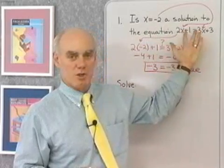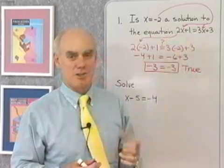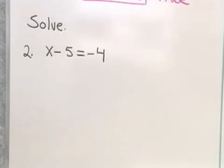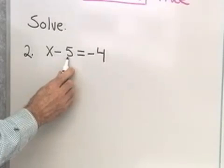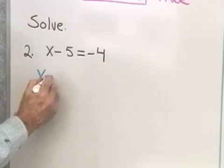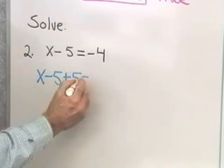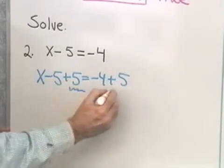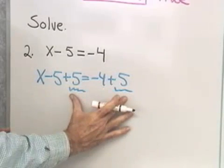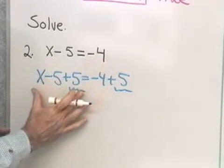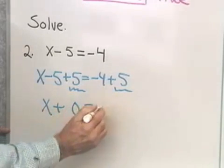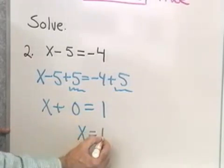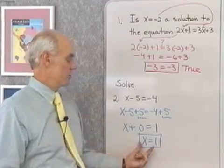Any other number we replace x with will give us a false statement. Let's solve our first equation: x minus 5 is equal to negative 4. I want to isolate x on one side of the equation, so I need to get rid of the negative 5 by adding its opposite to both sides. x minus 5 plus 5 is equal to negative 4 plus 5. The result on the left side is x plus 0, and on the right side I get 1. x plus 0 is x, so I have x equal 1 — that is the solution.